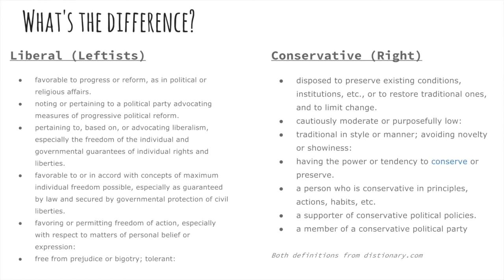That's why liberals and conservatives constantly discuss the meaning of words in the Constitution or the Bill of Rights. The Second Amendment is a perfect example. It talks about the right to bear arms — specifically, the right to own a weapon if you are part of a well-regulated militia. Liberals believe that should be taken literally: militias are illegal now, so no one has the right to own a gun. Conservatives read it differently, saying it means people have the right to own weapons to protect themselves and their property as part of their own individual militia. So conservatives go right to the language, whereas liberals interpret that language differently.